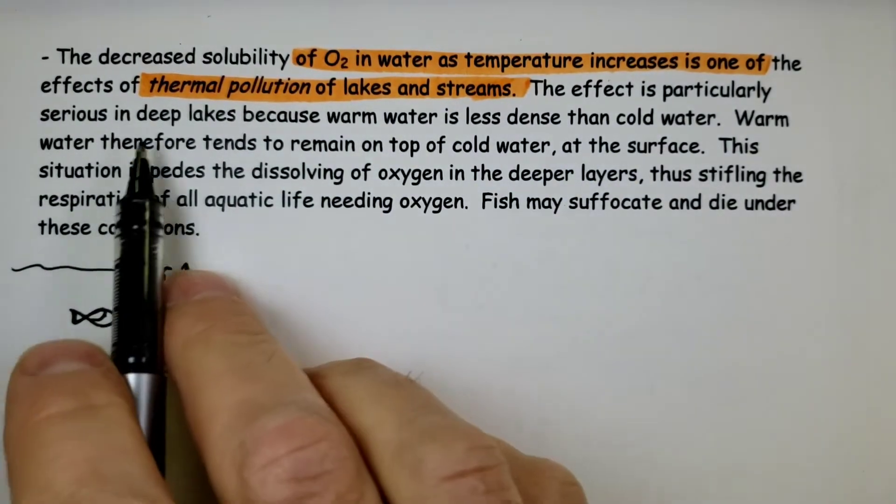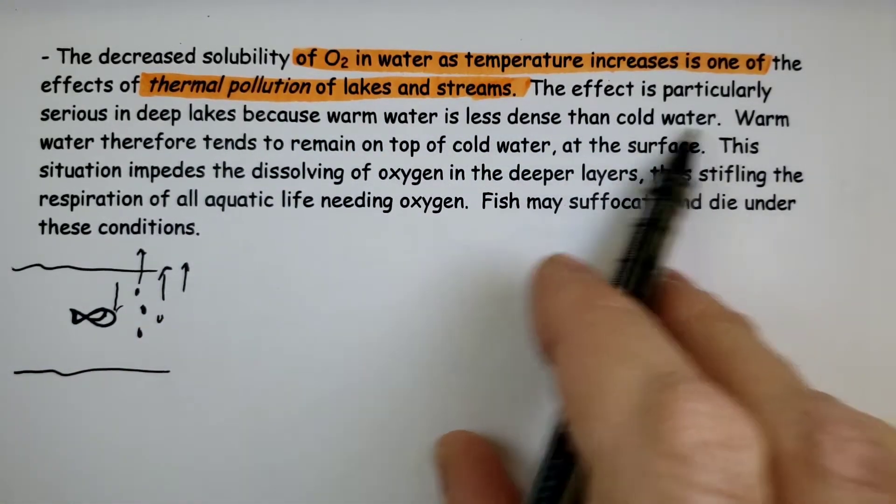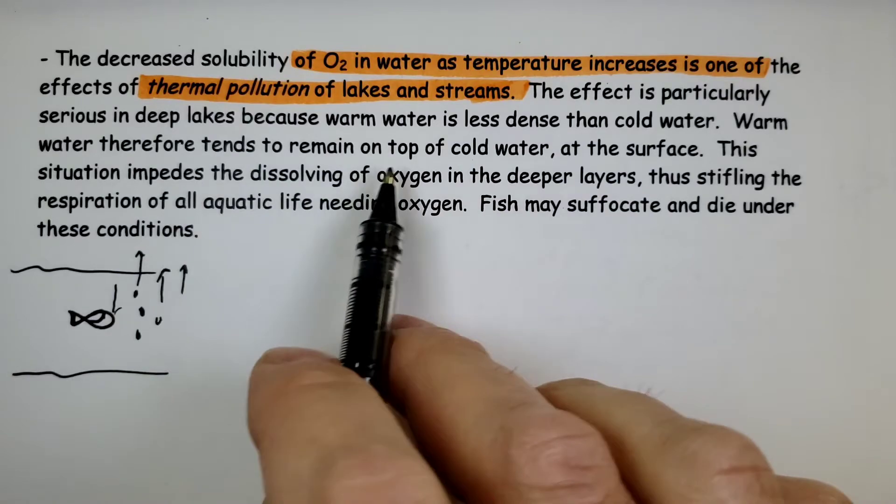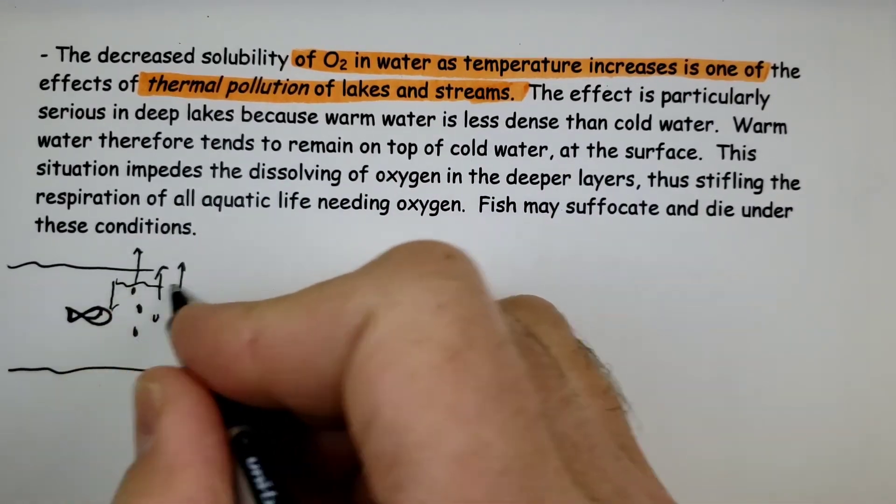So the effect is particularly serious in deep lakes because warm water is less dense than cold water. Warm water therefore tends to remain at the top of the cold water at the surface.